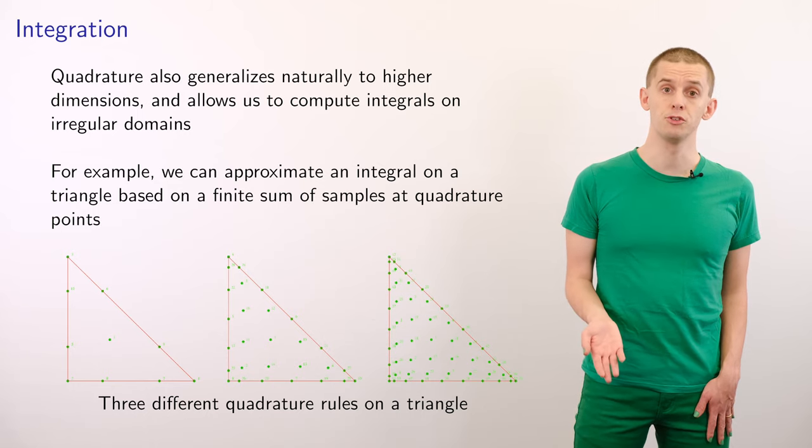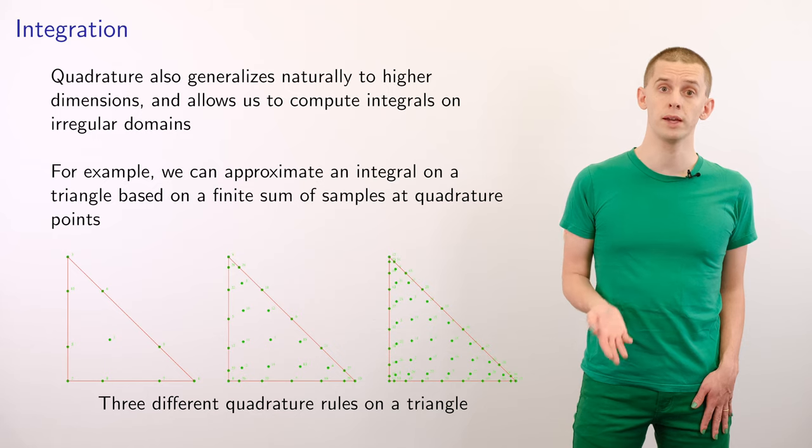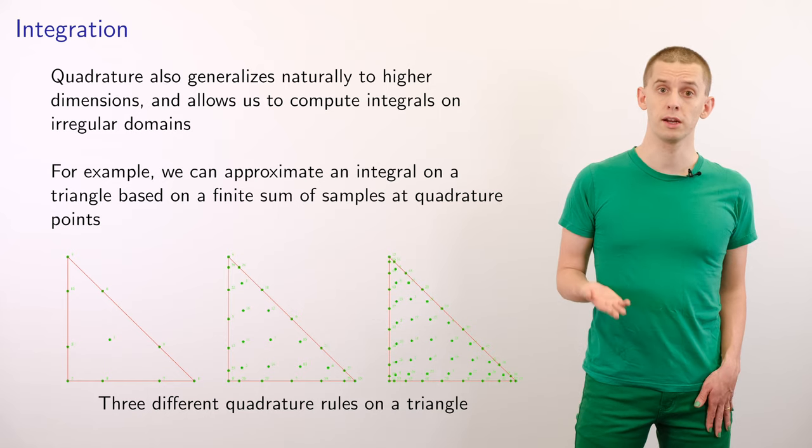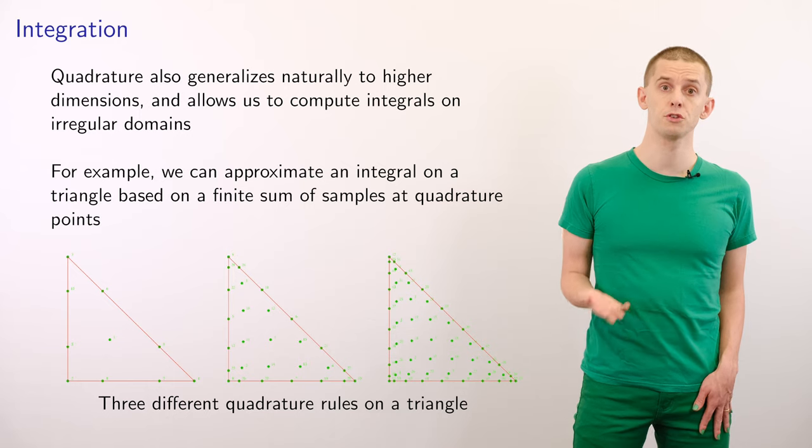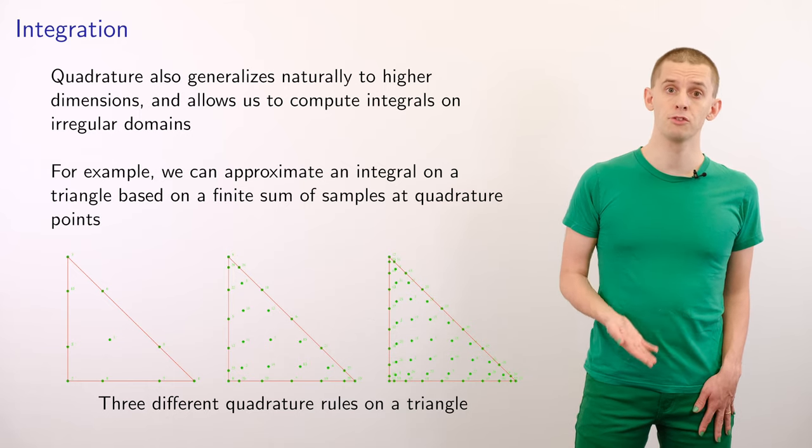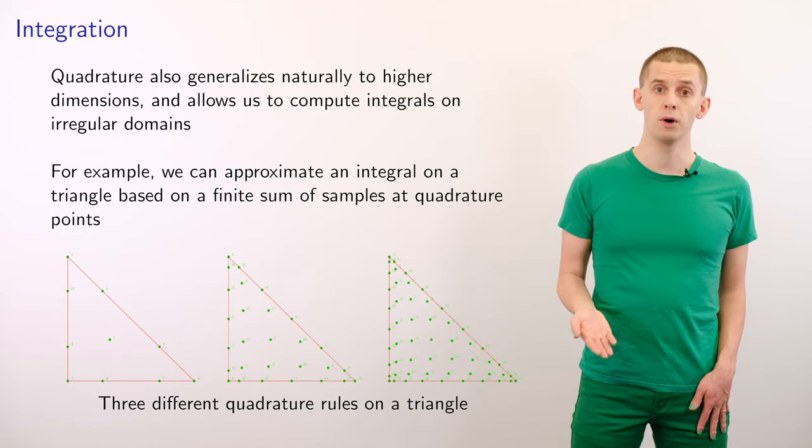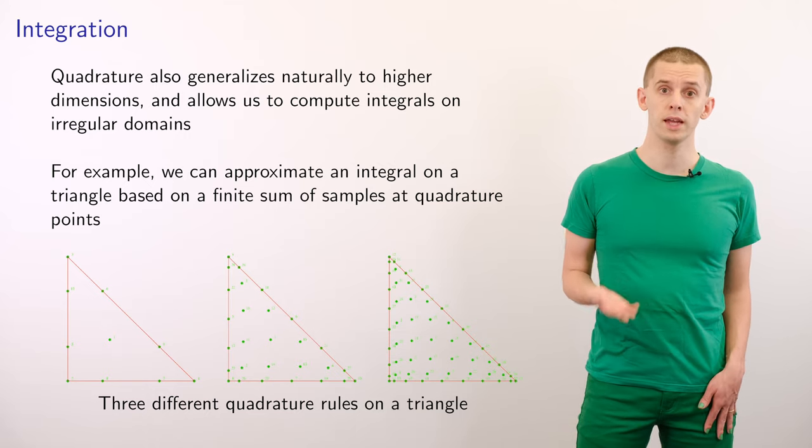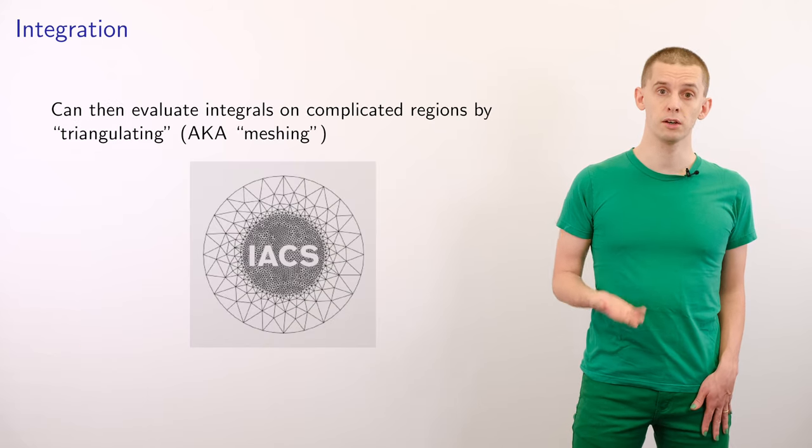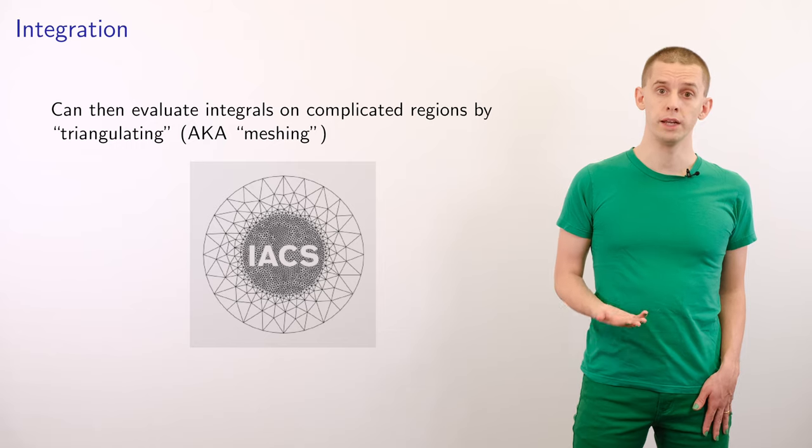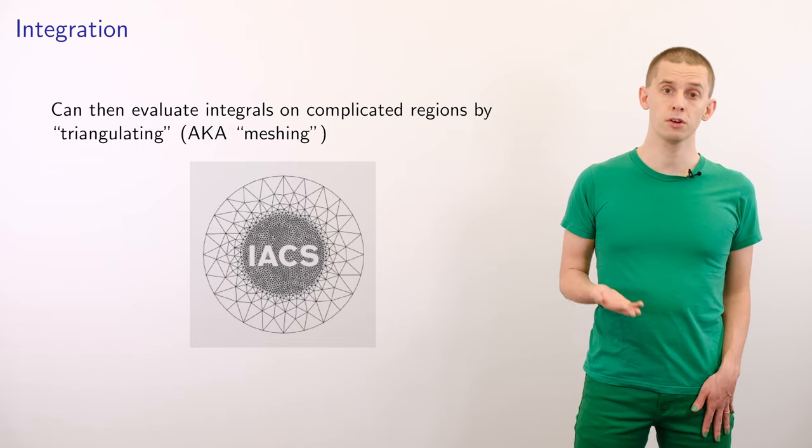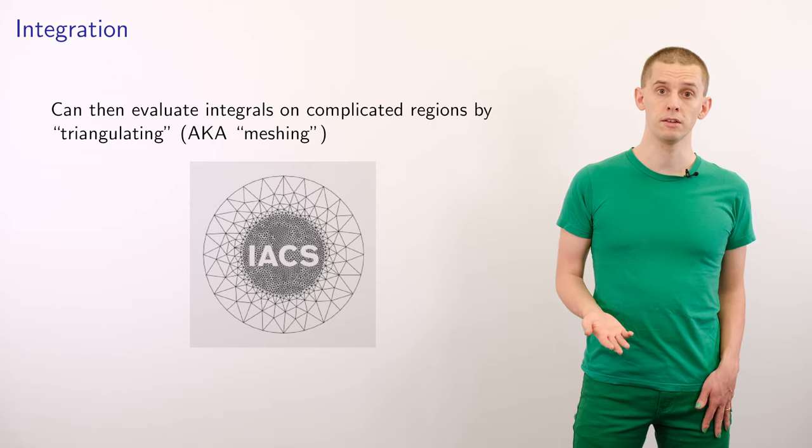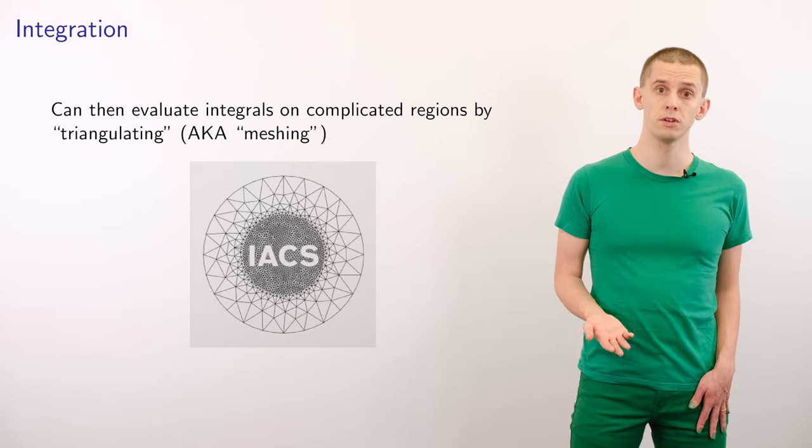Quadrature also generalizes naturally to higher dimensions and allows us to integrate functions on irregular domains. For example, suppose we look at a triangle. We can construct quadrature rules for integrating functions on that triangle by sampling the function at a number of discrete points across the triangle. I've shown three examples here, and the more points we use, the more accuracy we can get in our quadrature rule. Once we have this quadrature rule for a triangle, we can apply this to more complicated domains. Here I'm looking at a complicated domain where I have a circle and I've taken several letters out from it. I've constructed a triangular mesh over this domain. Now, if I was given a function on this domain, I could integrate it by integrating the function on all the triangles and summing the result.